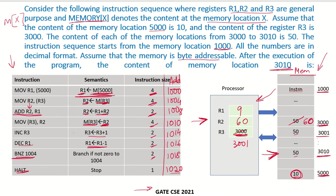The next instruction is a branch: Branch If Not Zero to memory address 1004. We check the value of R1 — the last operation was on R1. Since R1 is still 9, it is not zero, so we go back to address 1004 and start executing the instructions again from there.